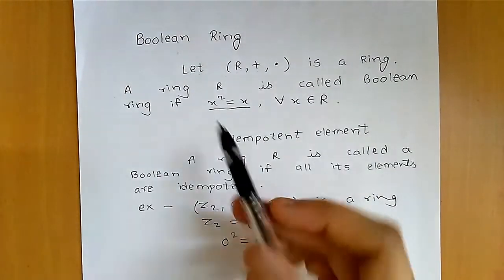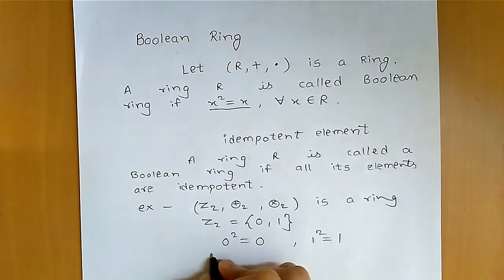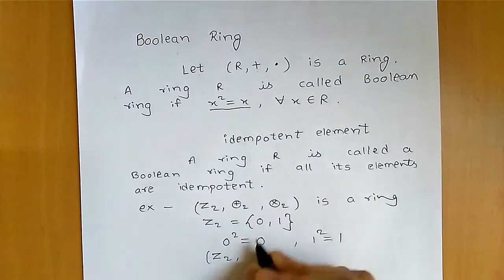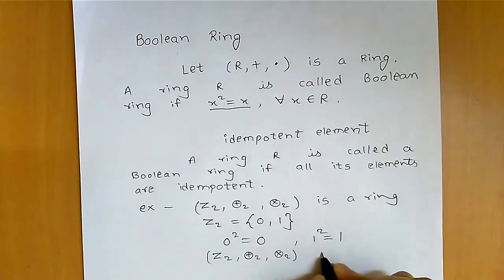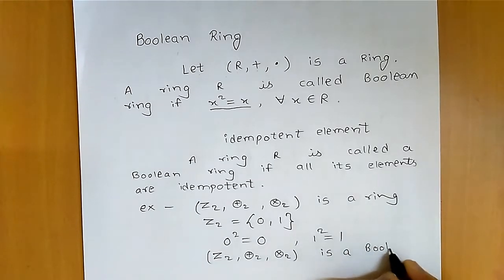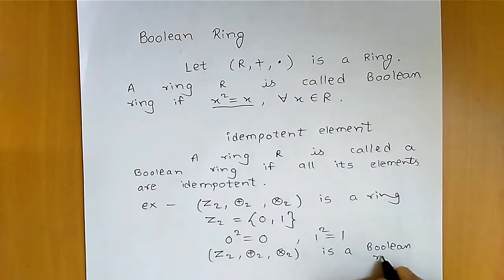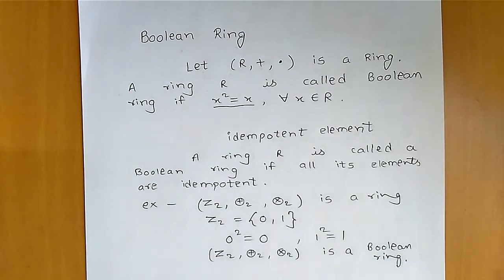Every element of Z₂ satisfies this property. Therefore Z₂ under addition modulo 2 and multiplication modulo 2 is a Boolean ring. Let's see one more example.